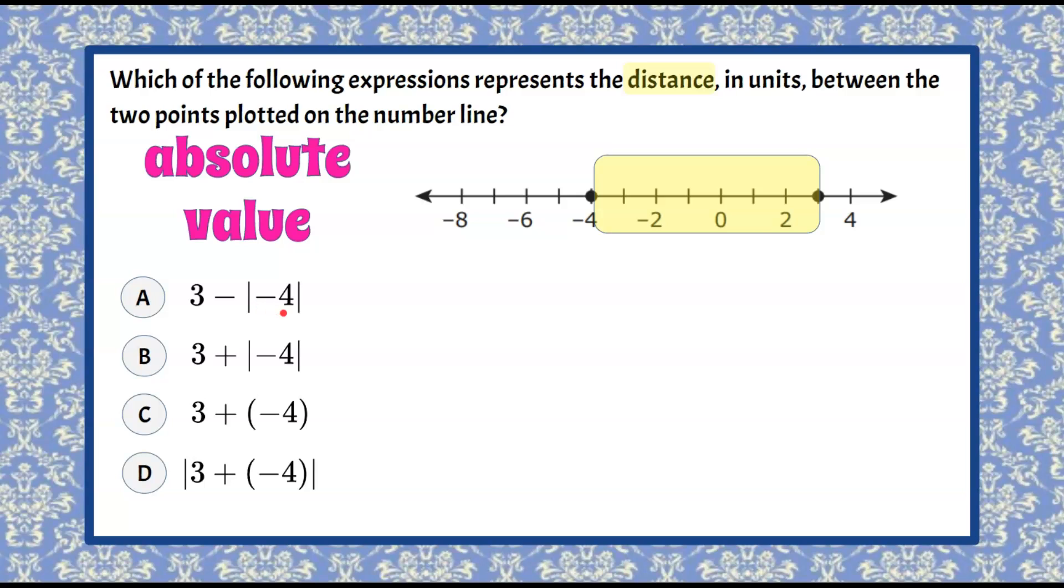So the absolute value of negative four is four. The absolute value of three would be three. It's the positive distance and that's kind of a redundant statement because when we talk about distance, distance is always positive. Distance is never negative.